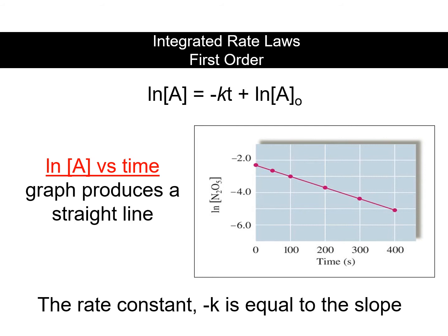The rate constant will be equal to the slope. The slope is negative, so negative k is equal to the slope. The units for k on a first-order reaction is per second.